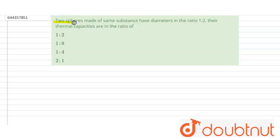The question is: two spheres made of same substance have diameters in the ratio 1:2. Their thermal capacity are in the ratio of?